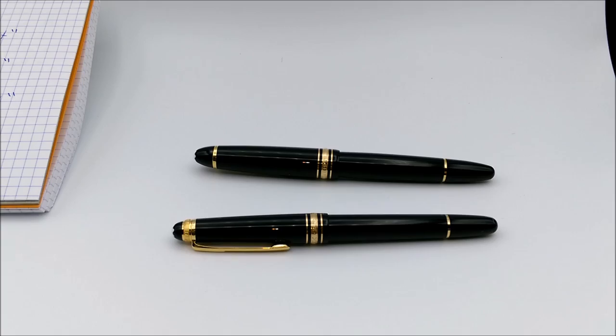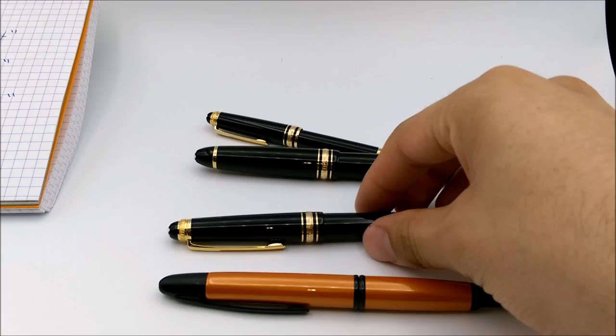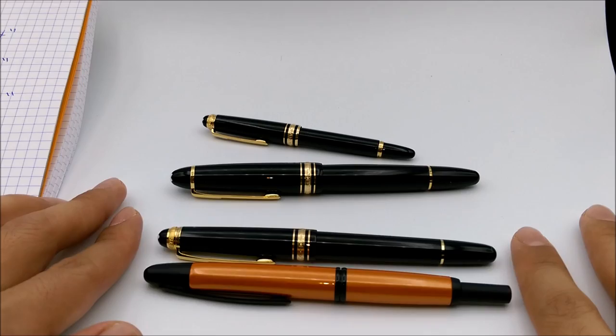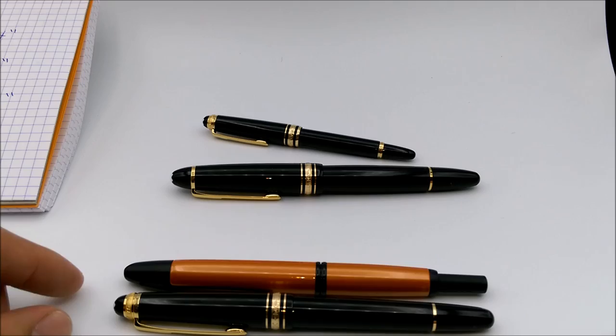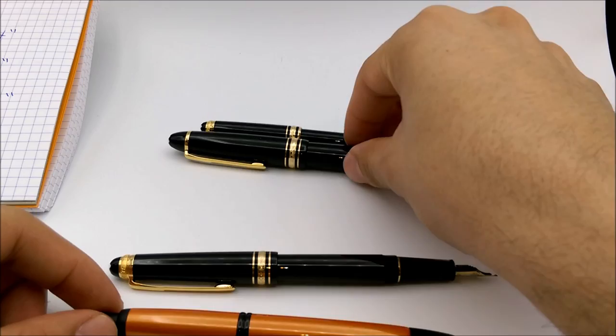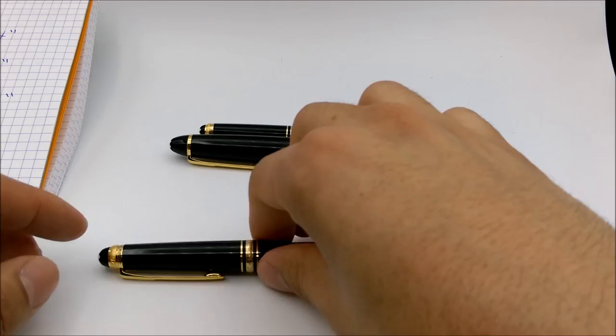For extra size comparison I will also put a Pilot Vanishing Point here, which is a very common pen. If you see, the VP is almost the same size as the 145. The camera angle makes it look like the 145 is smaller but really it's basically the same. Posted, the 145 is quite longer than the Vanishing Point, especially because when you extend the nib you lose a little bit of length.